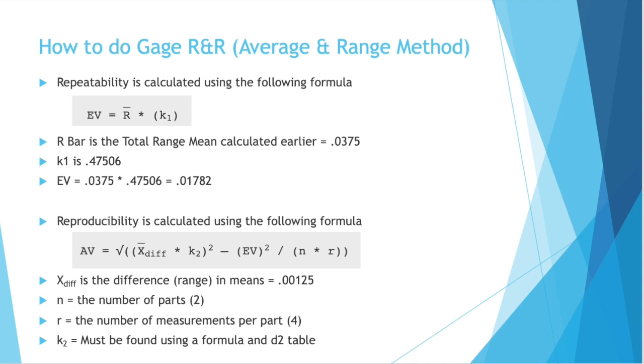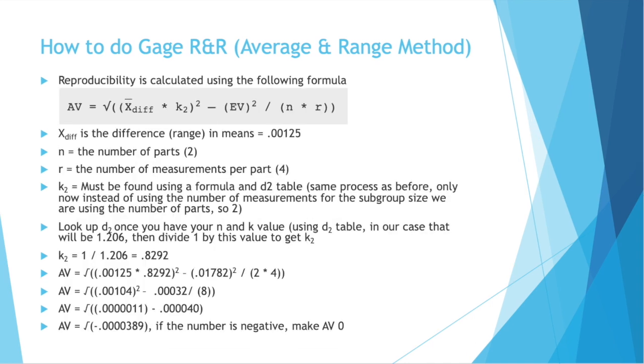The difference with our d2 table this time, we're still using the same table, but instead of using the number of measurements for the subgroup size, we are using the number of parts, so 2. So 2 and 4 on your table, not 4 and 4, and that gets you a different value. That gets you 1.206 for your d2 value. Plug that into your equation of 1 divided by d2, and we get .8292 as our k2 value.